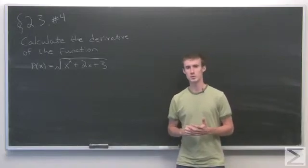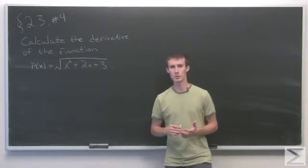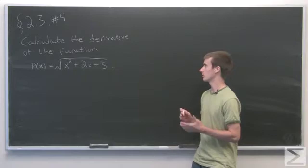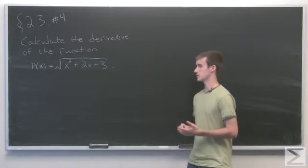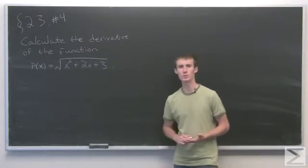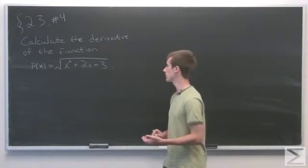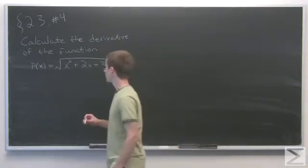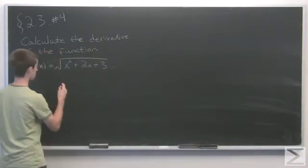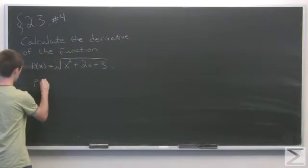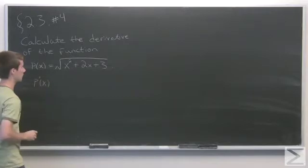In problem number four of section 2.3, we're asked to calculate the derivative of the function p of x equals the square root of x squared plus 2x plus 3. This is a composition of functions, so we'll need to use the chain rule.